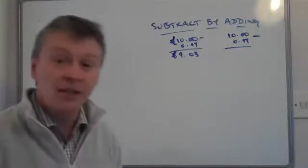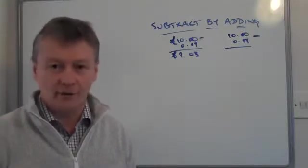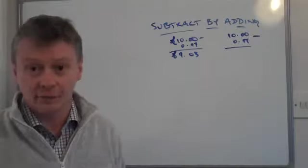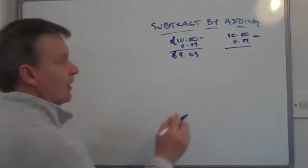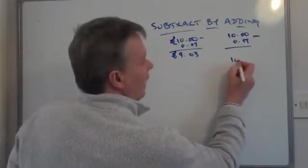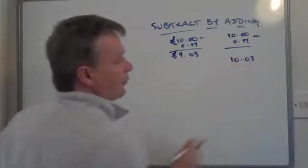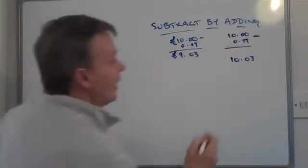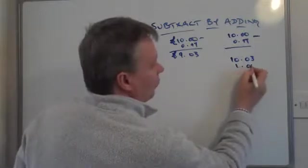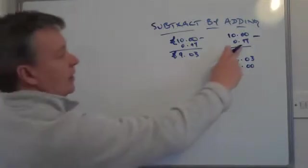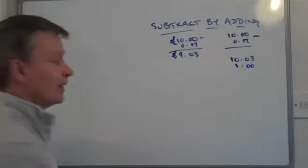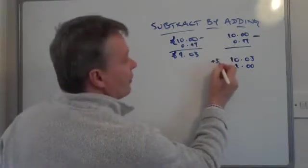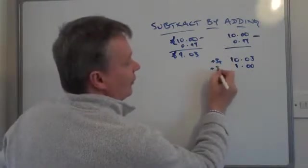What I mean by that is it's much easier to take away £1 than it is to take away 97p. So if I rewrite that, I'm going to get 10.03 because I've added 3p onto that £10, and I've got 1 pound because I've added 3p onto that 97p. So both of those are adding 3p.